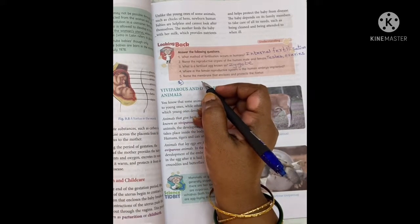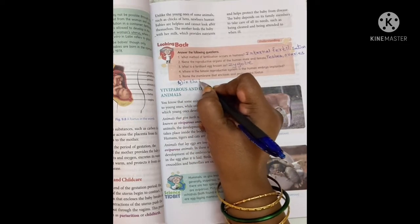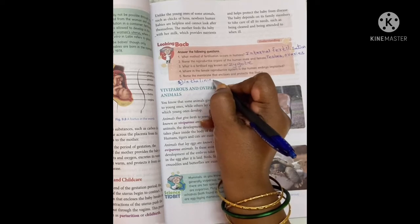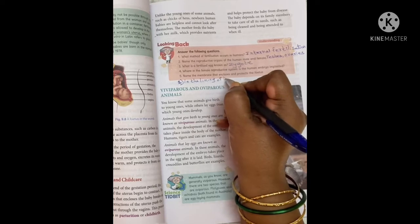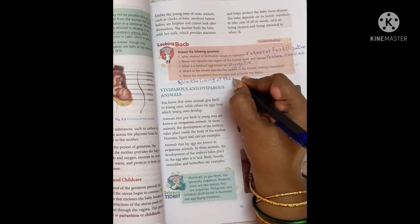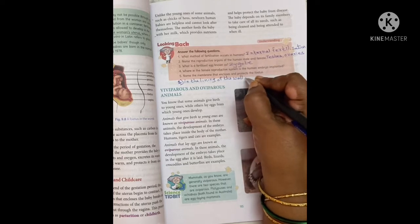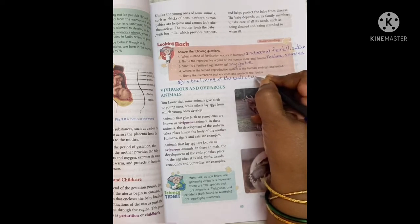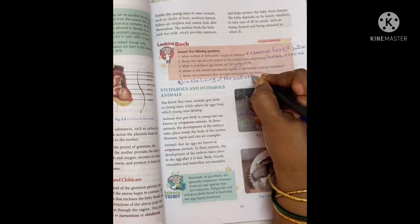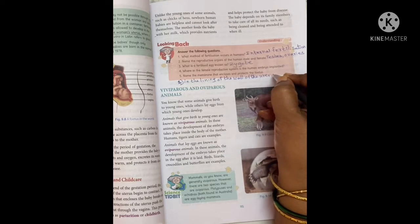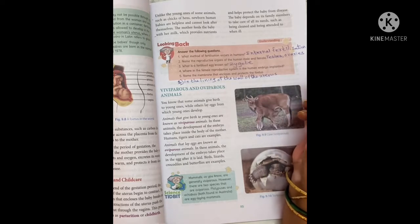Where in the female reproductive system is the human embryo implanted? It is implanted in the lining of the wall of the uterus.